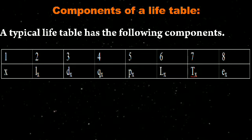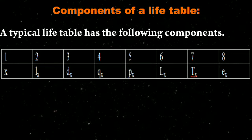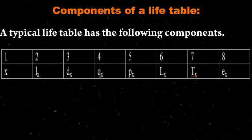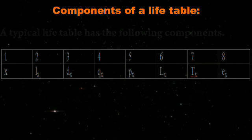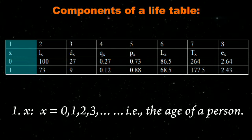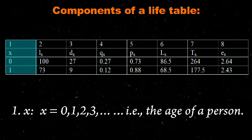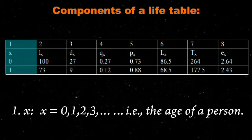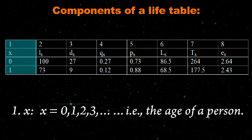Here you can see the life table in the given slide. The first row of the life table indicates a serial number allotted from 1 to 8 because there are 8 different components. The second row indicates the notations for the 8 components. The first component is x, which indicates the age of a person. The age always starts with 0, then 1, 2, 3, and so on — a person can live 60 years, 65 years, or 100 years.